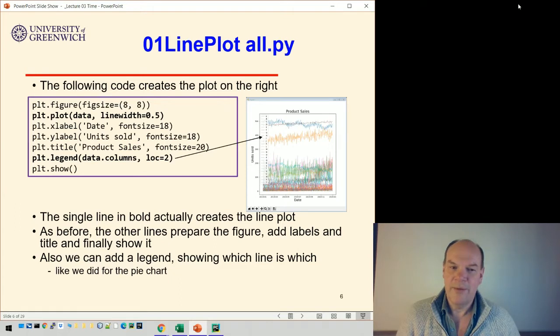We do a legend of the data columns, which is the product name. So A, B, C, D, E. And location two, that just puts it to the left, top left. There's other locations you can have it, but that seems to be quite a nice one for these charts.